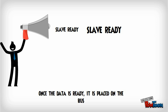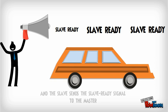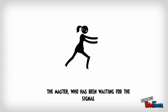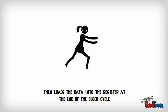Once the data is ready, it is placed on the bus and the slave sends a slave-ready signal to the master. The master, who has been waiting for the signal, then loads the data into the register at the end of the clock cycle.